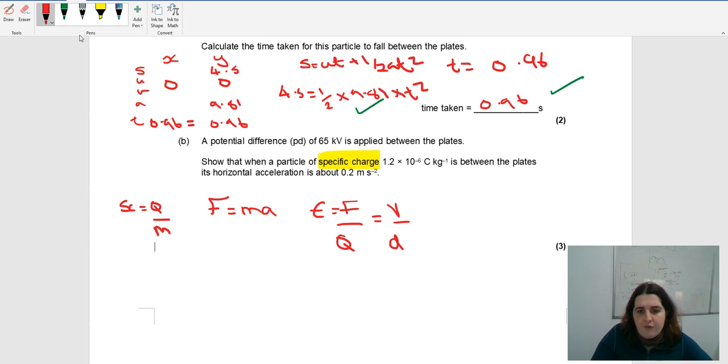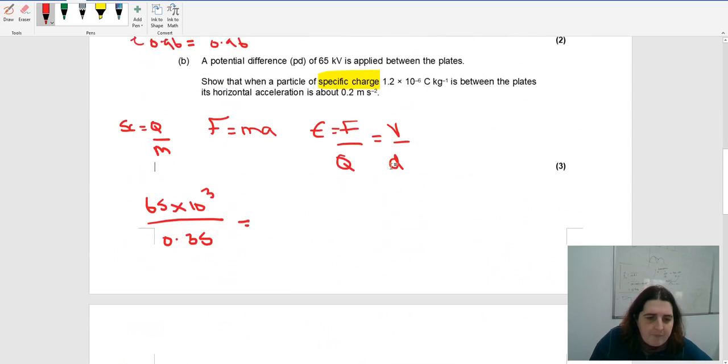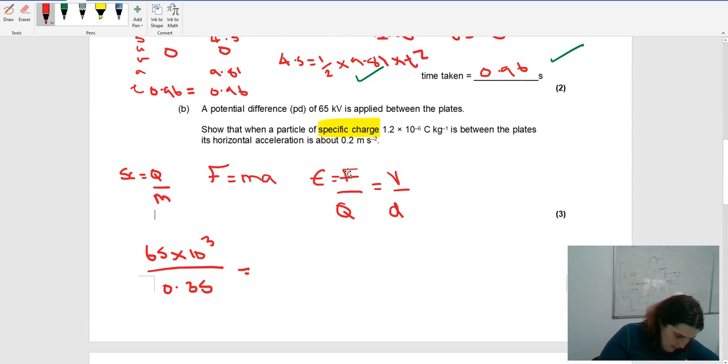I can work out the field strength. I've got 65 times 10 to the 3 over 0.35, because that's the distance between the plates. So my field strength is 185.7 times 10 to the 3 newtons per coulomb.